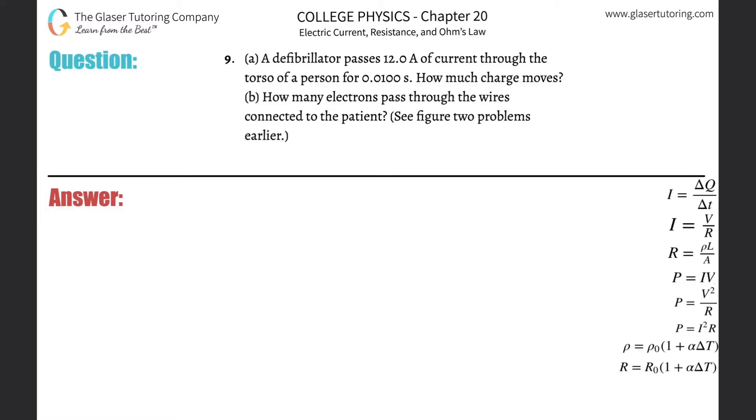Number 9. A defibrillator passes 12 amps of current through the torso of a person for 0.01 seconds. How much charge moves?